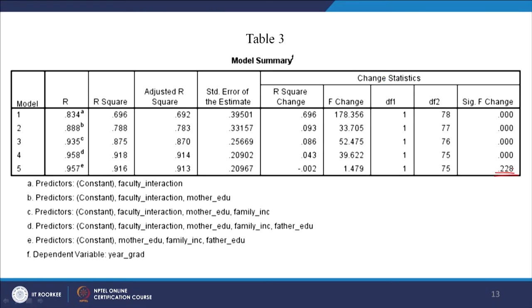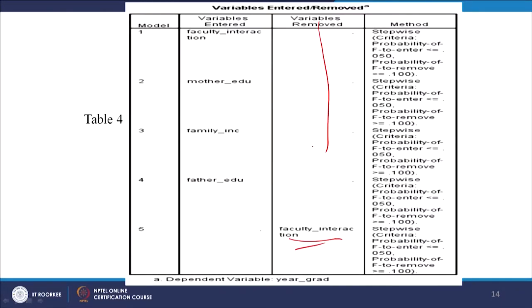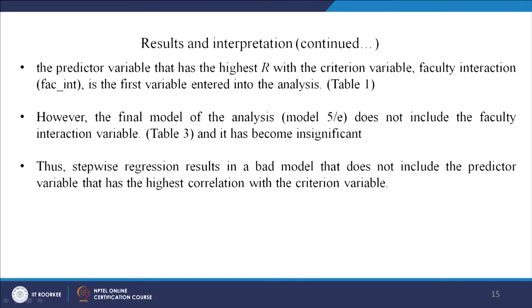Interestingly, in the last model — model E — faculty interaction is not present; it has been removed, even though it was my best predictor. As stated: the predictor variable with the highest R with the criterion variable — faculty interaction — is the first variable entered. However, the final model does not include it and it has become insignificant. Thus stepwise regression results in an awkward model that does not include the predictor variable with the highest correlation. This problem can be eradicated by using the hierarchical multiple regression method.